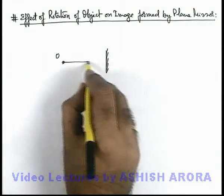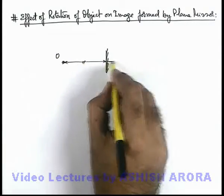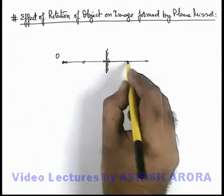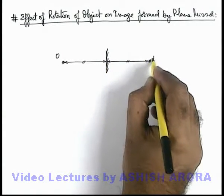And we know that the corresponding image is obtained exactly at the same distance behind the mirror. Say this is the position of image.